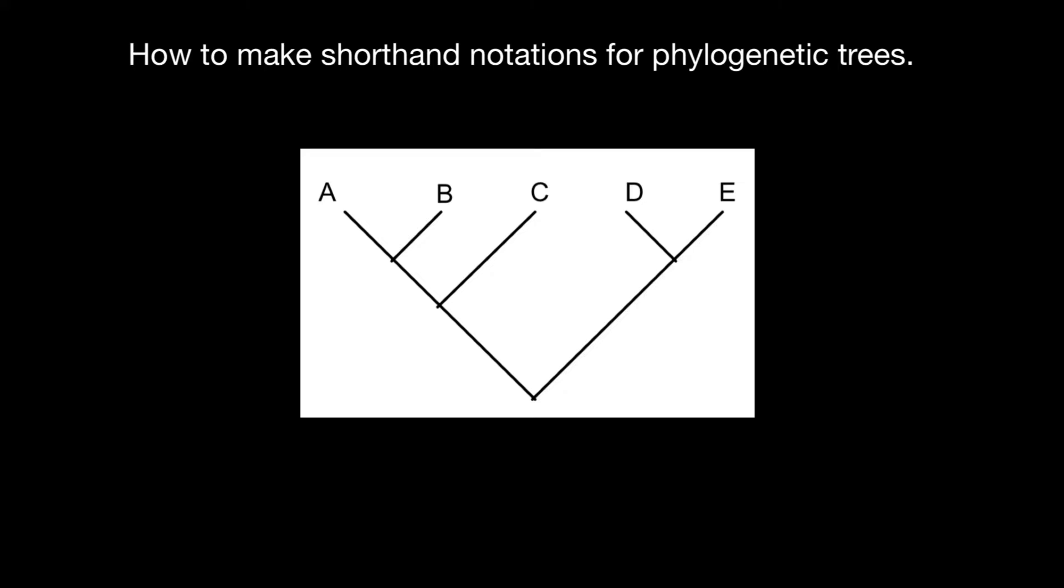So let's first take, for example, this part, and we are going to use the same letters A and B. So we put A and B separated by comma, and we put them in parenthesis. So now we describe this part of this phylogenetic tree.